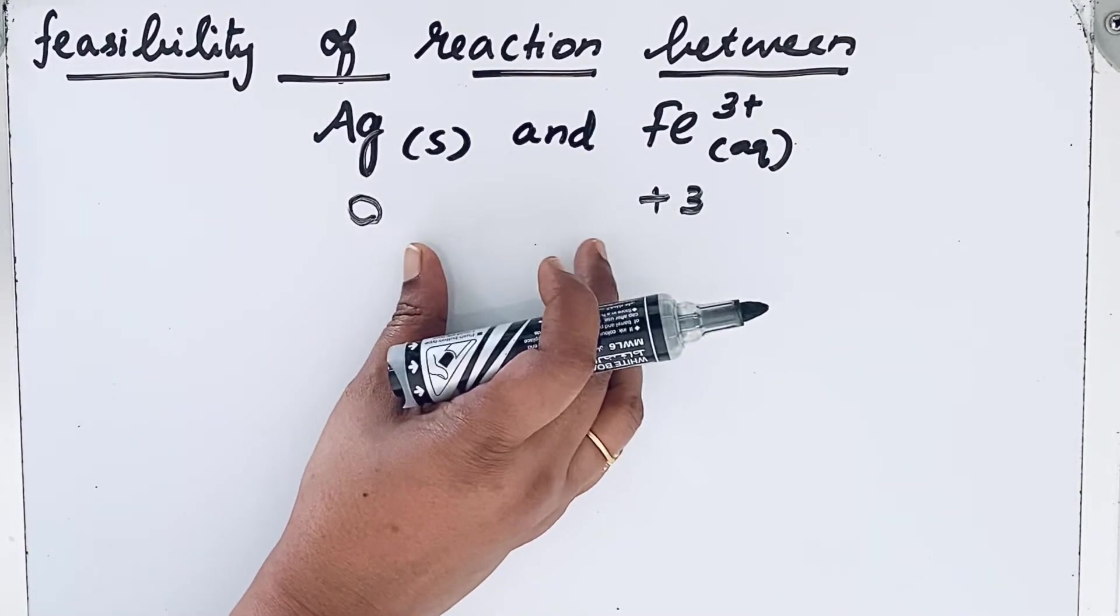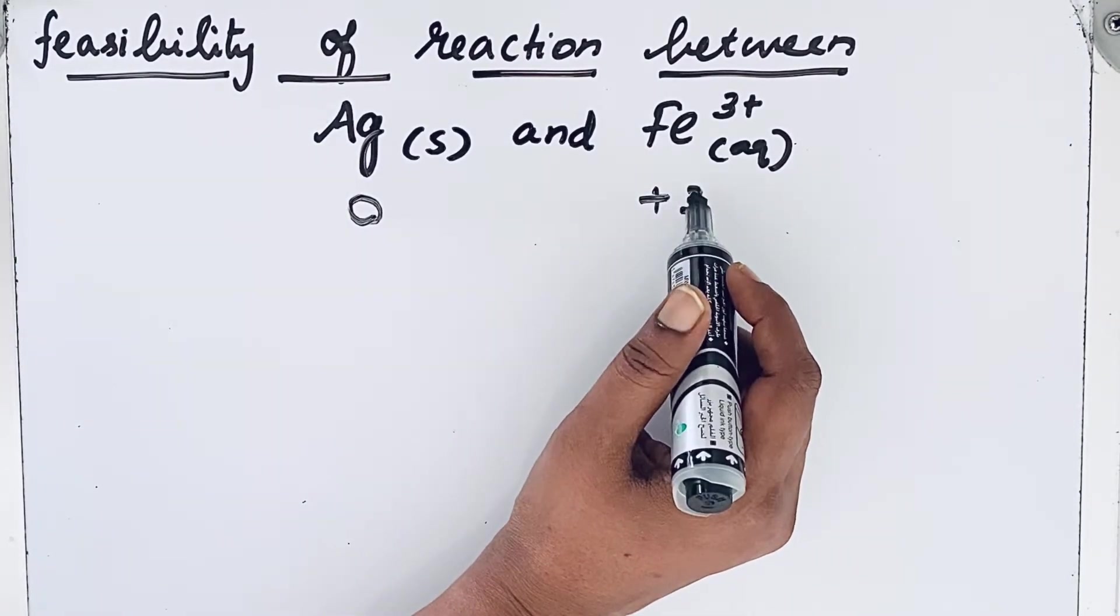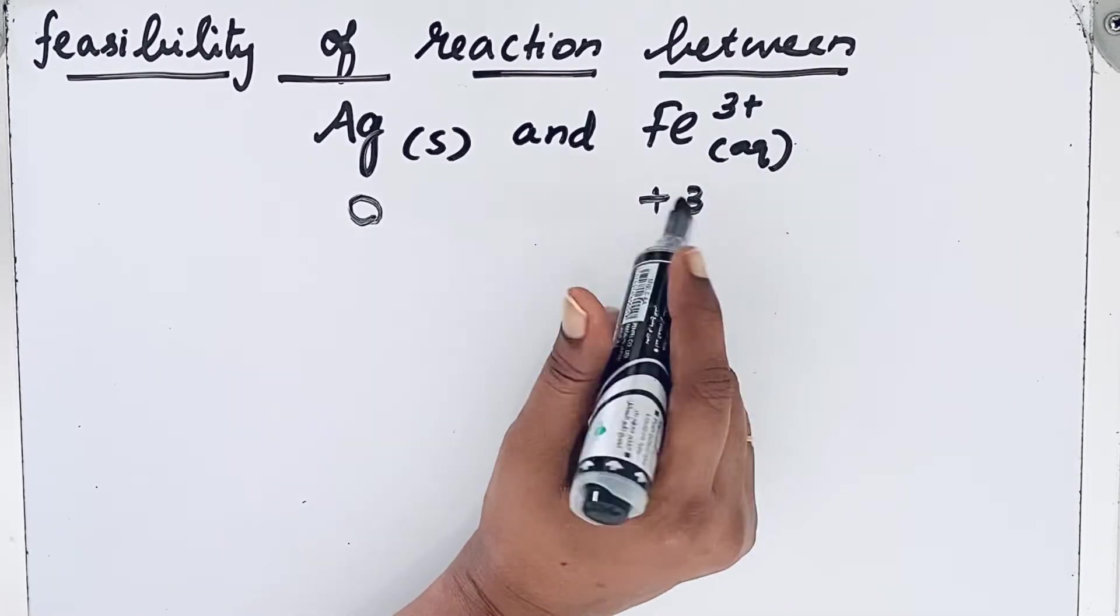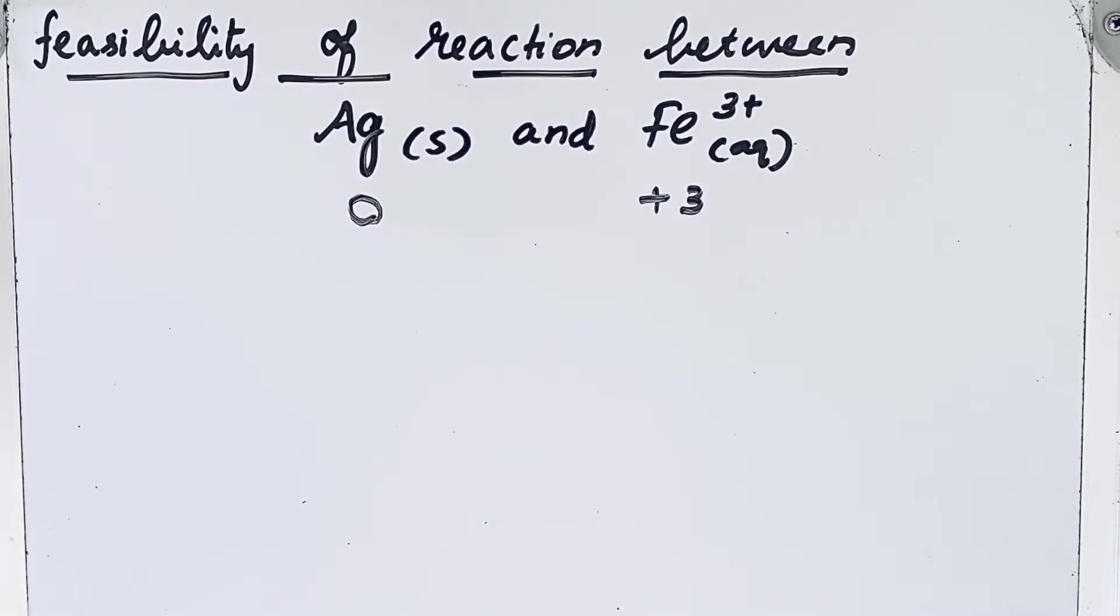Among these two, which one is having the higher oxidation state? Fe³⁺, plus three oxidation state. Generally, the reagent with higher oxidation state behaves like an oxidizing agent, which can pull the electrons from the reducing agent.